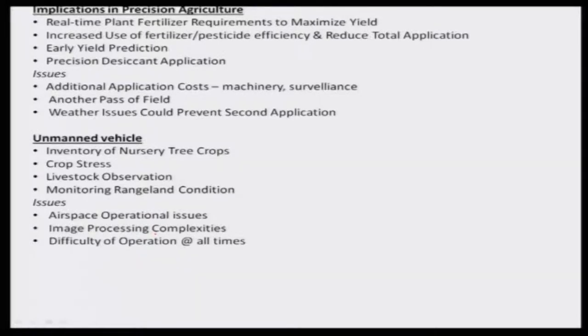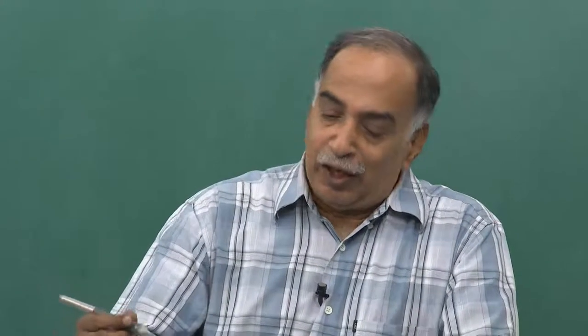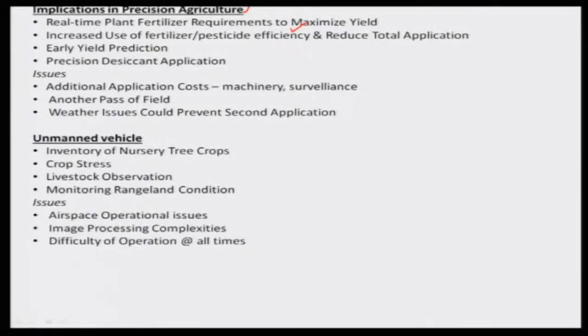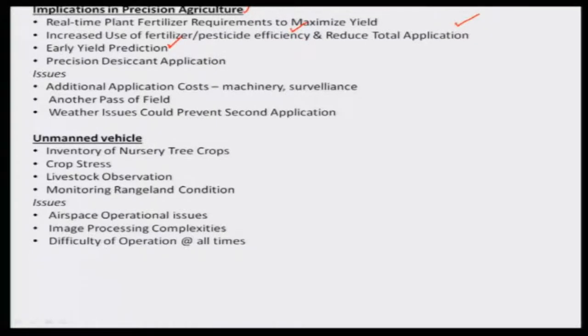What are the implications of precision agriculture? There is a fertilizer requirement that is needed immediately for growth — if you delay, you need a ready stock for delivery. You also need efficiency in using fertilizers and pesticides. Reducing total applications means reducing the amount of fertilizer or pesticide that gets washed off or removed from higher elevation areas to lower elevation areas. All these yield benefits support early yield prediction, which is useful for commercial purposes — enabling trading with assured quantities of a particular variety.